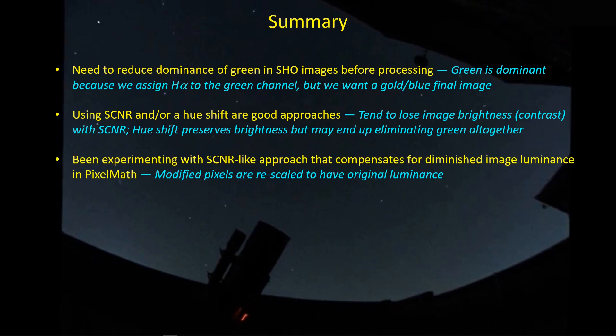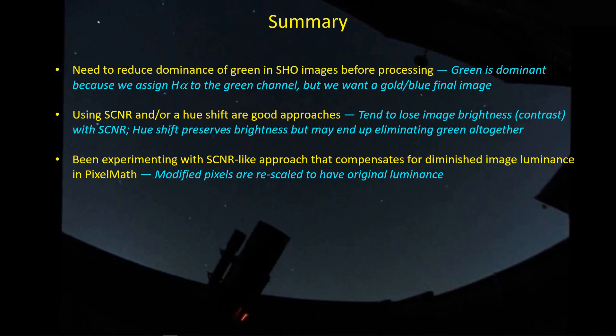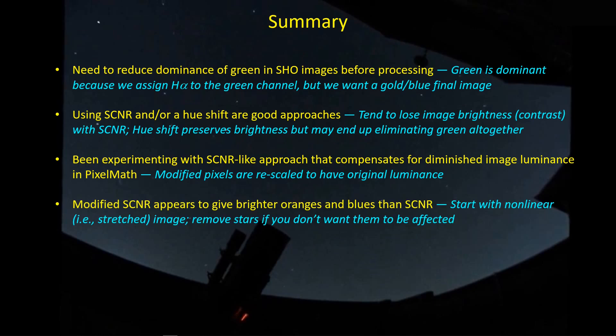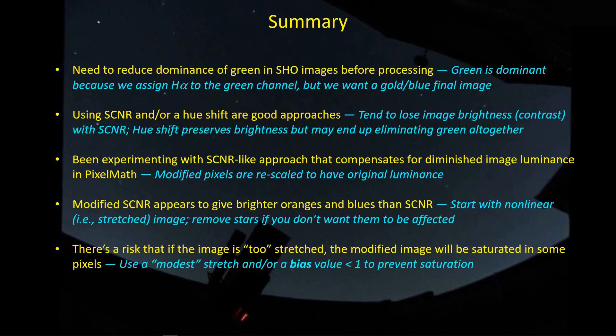The hue shift is probably a better approach in that it preserves the luminance within the original image, whereas the SCNR process that's in PixInsight treats green as a noise contributor rather than as a major signal that it is. So what I've been doing is experimenting with an SCNR-like approach. However, I'm adding on a step in which I pump up the luminance back to its original value even though I've reduced green quite a bit. It's important not to stretch the original SHO image too far. You want to start with a non-linear image but you don't want to go too far, otherwise you end up with some saturation in some pixels. I've been trying this modified SCNR function out on several of my SHO images and it seems to work pretty well.